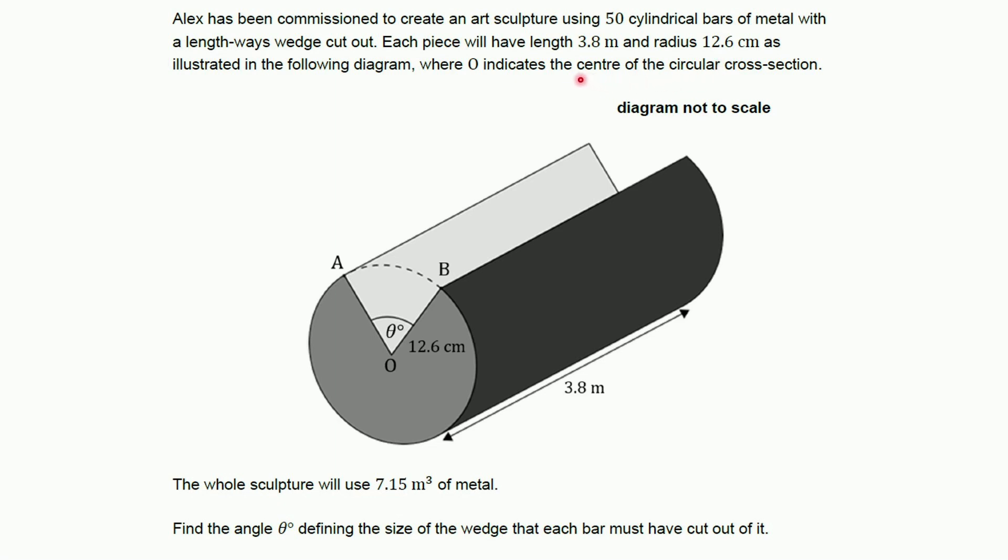I love how the British spells center incorrectly, at least according to Americans. Alright, the whole sculpture will use 7.15 cubic meters of metal. And our task is to find the angle marked theta, defining the size of the wedge that each bar must have cut out of it.